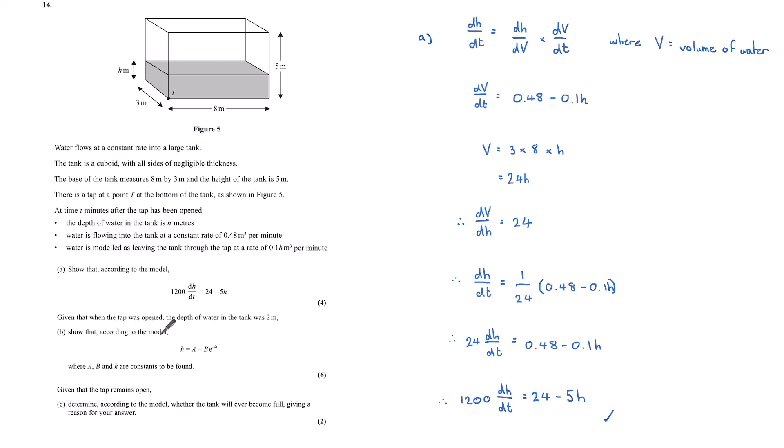Given when the tap was opened, the depth of water in the tank was 2 meters. Part B show that according to the model, h is equal to a plus b e to the minus kt, where a, b and k are constants to be found. This is for six marks. Let's bring in our starting formula. We've got that 1,200 dh by dt is equal to 24 minus 5h. I want to write h is equal to something in terms of t. I have here a differential equation, so I want to try and solve this for h, but I have h's and t's, so we're going to use separation of variables to rearrange this equation.